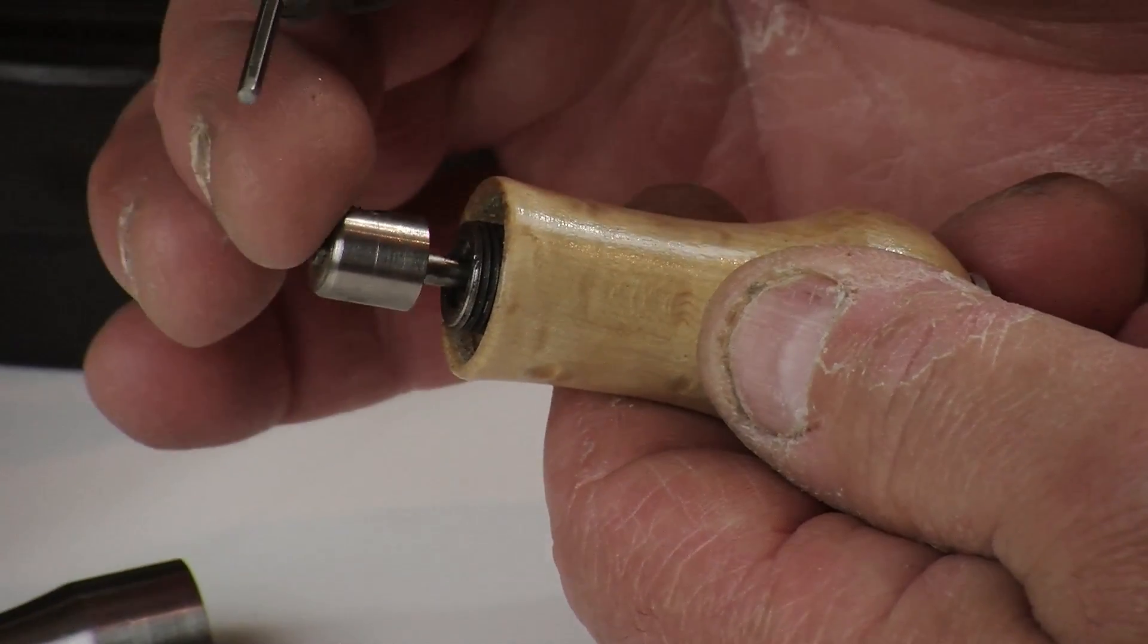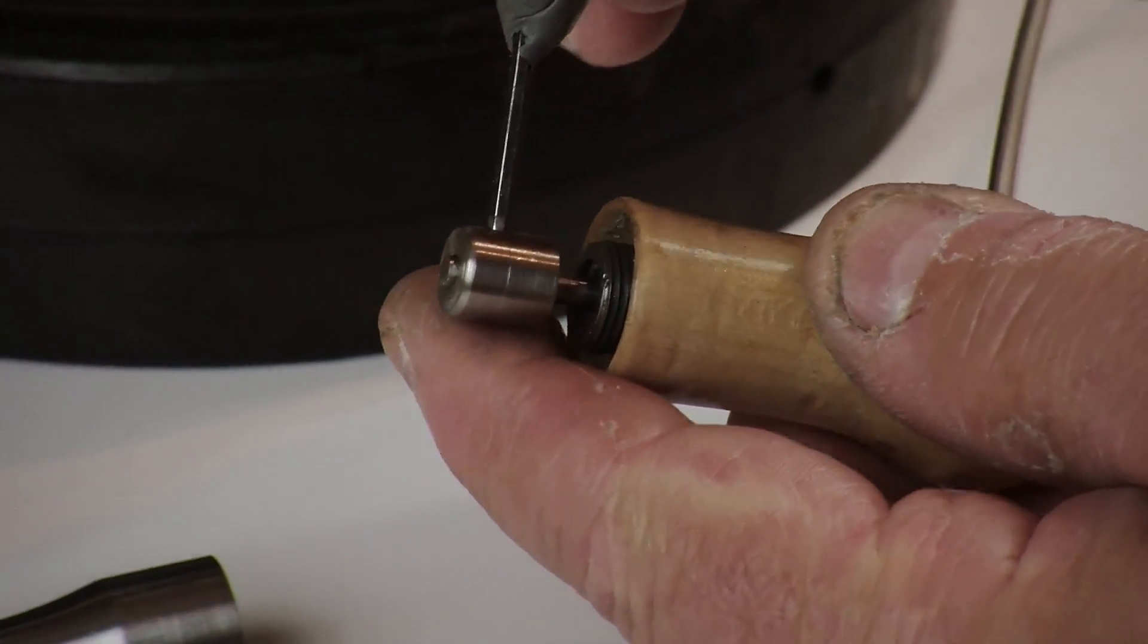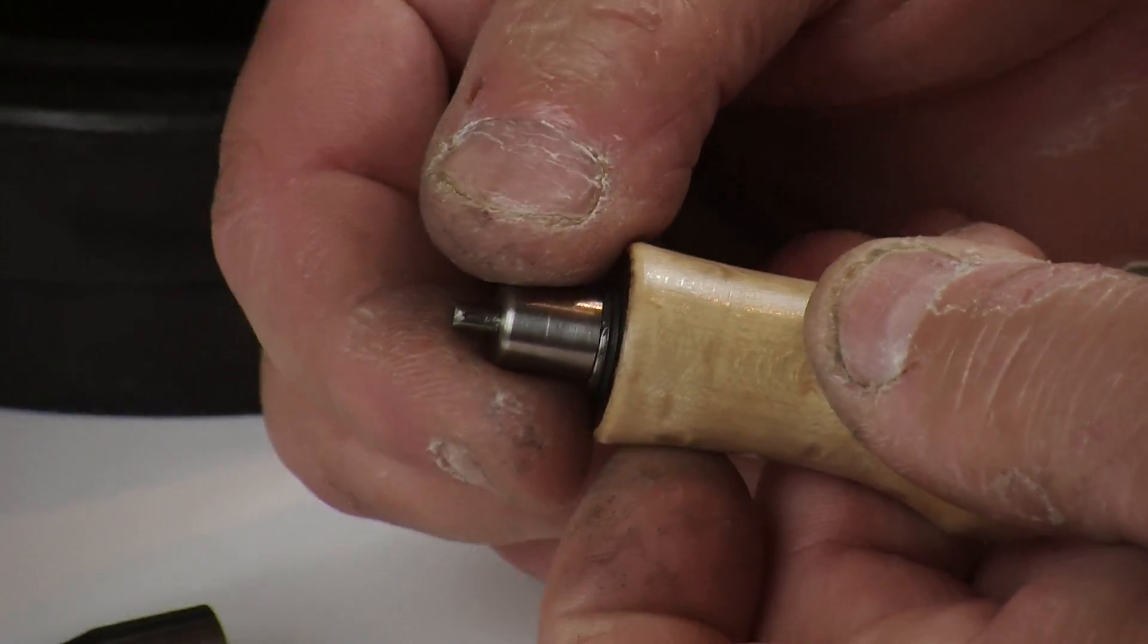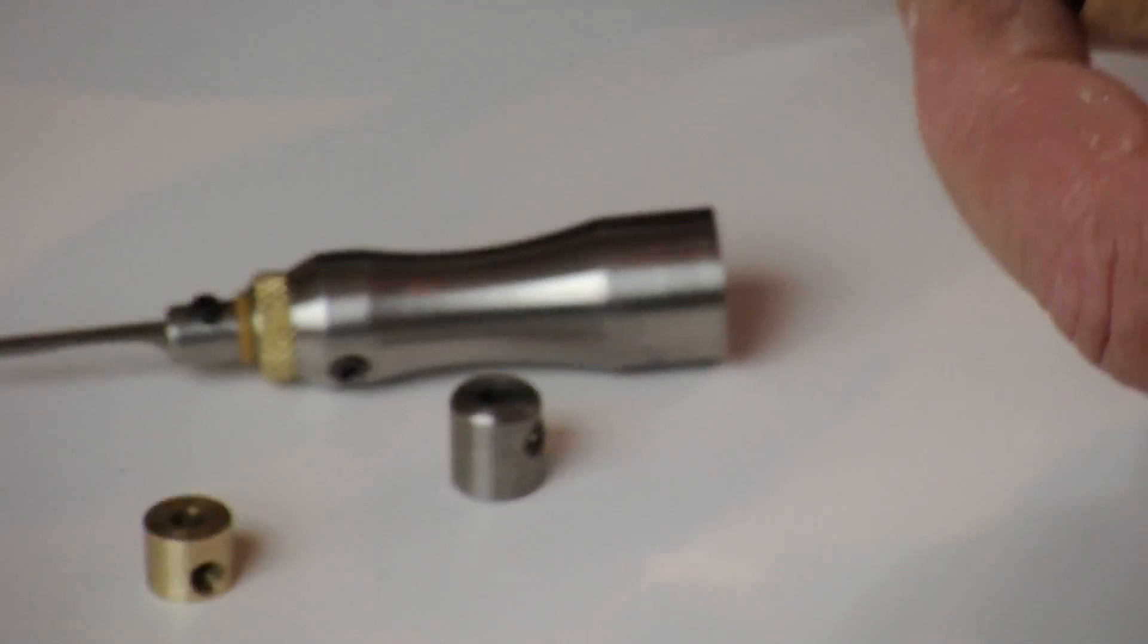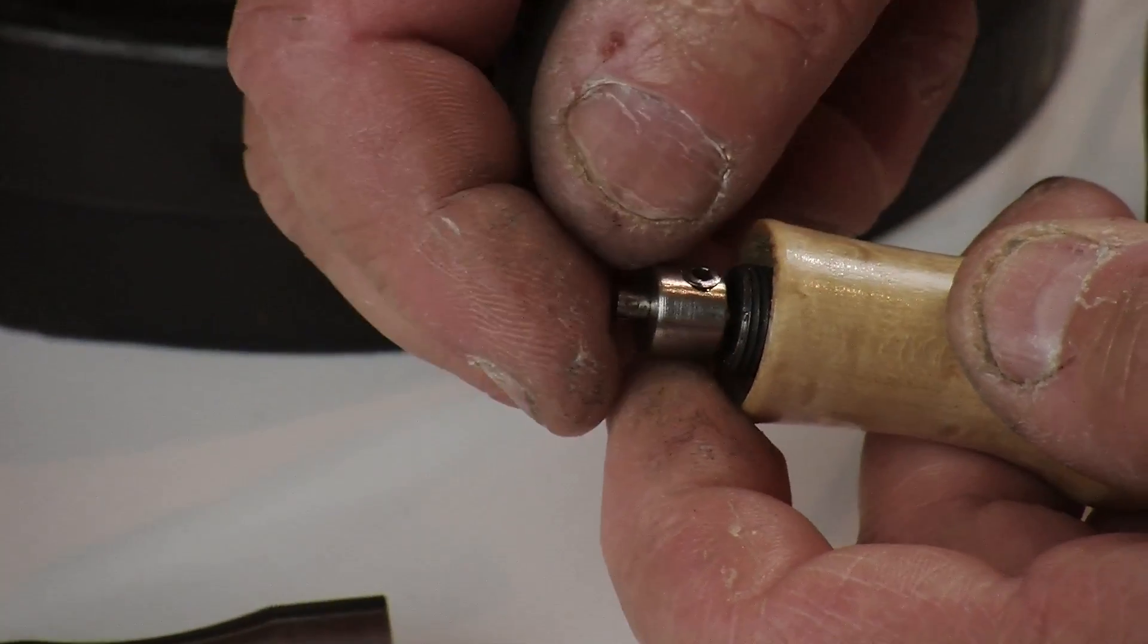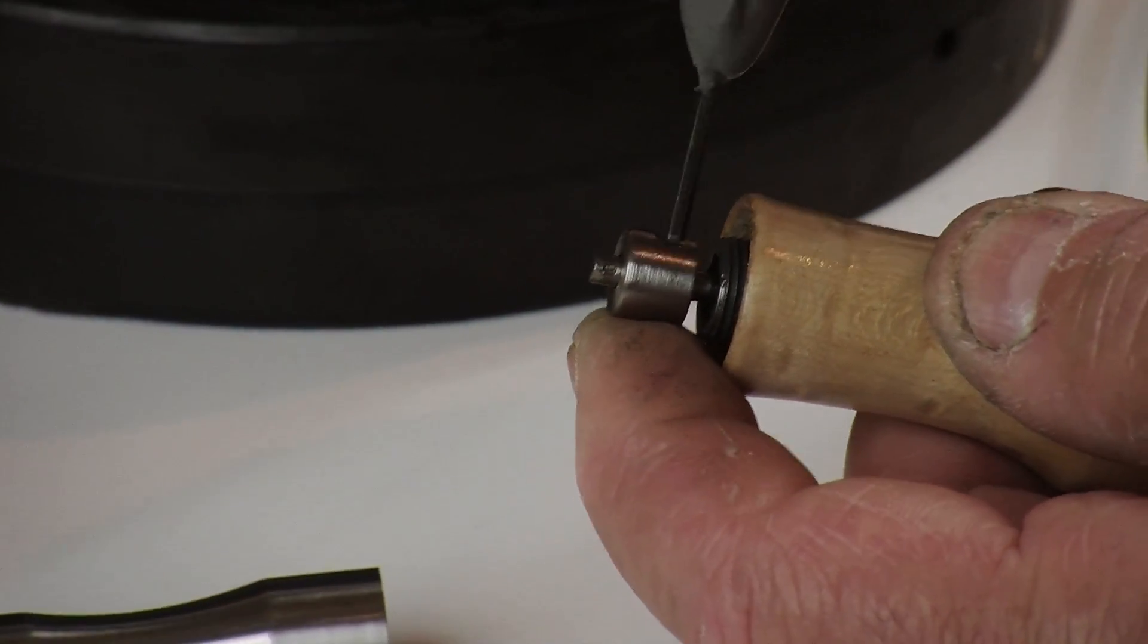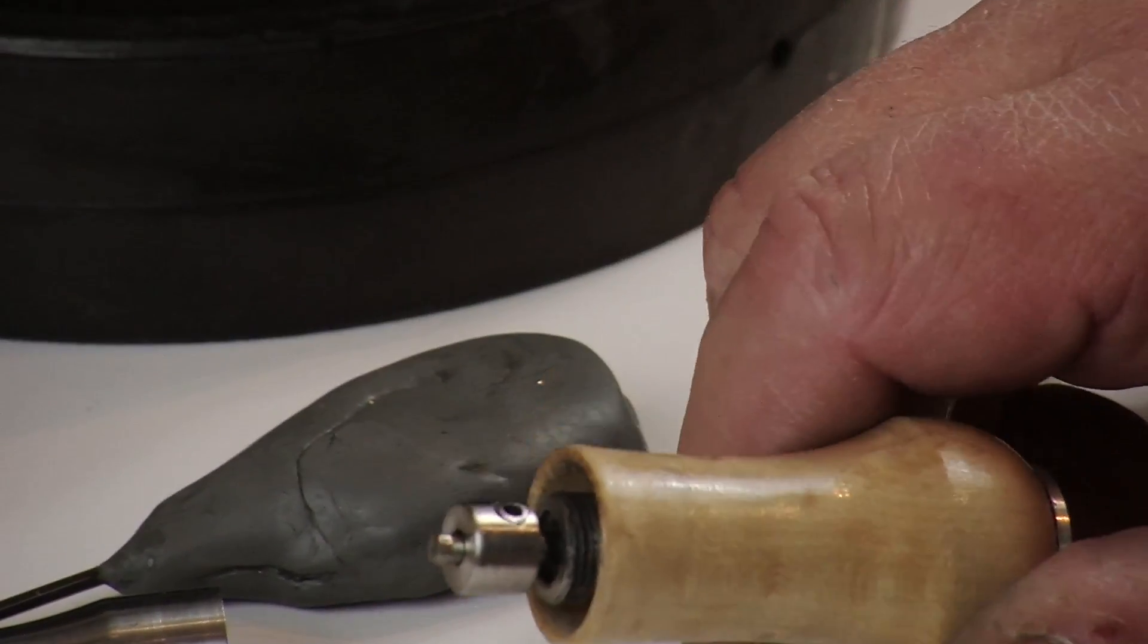This external striker head can be changed by simply loosening a set screw—you can see it doesn't have to be very tight. Slide it off the shaft, then install whichever weight depending on the job you're going to do. Now let's take a look at how this thing runs.